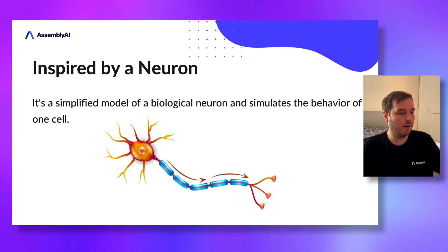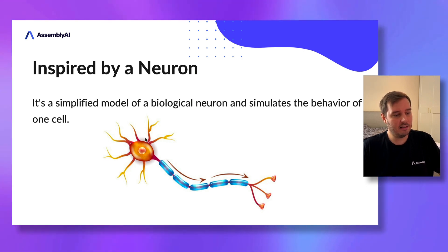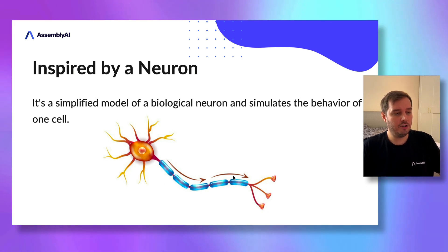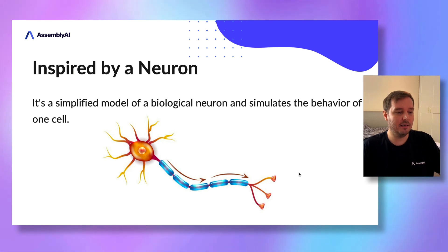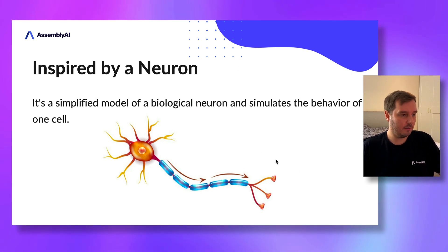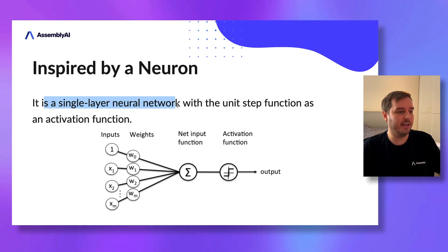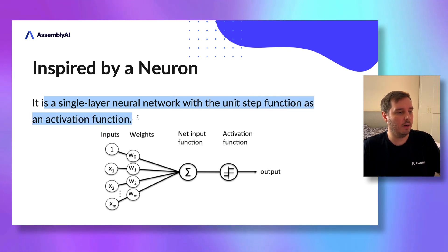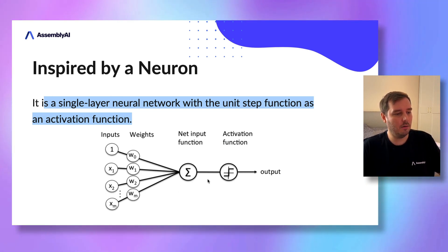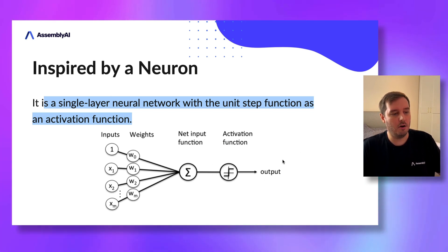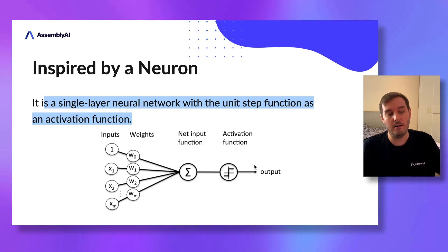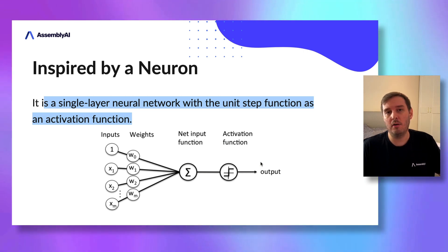Consider a neuron that receives an input signal traveling along the way. If it reaches a certain threshold, the cell activates — we say the cell fires — and then it gives an output signal. In our mathematical representation, this is a single layer neural network with the unit step function as activation function. We have inputs multiplied by weights, summed up, and passed through the activation function, which outputs 1 if the cell fires or 0 if it doesn't, corresponding to class labels 1 and 0.